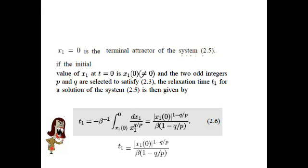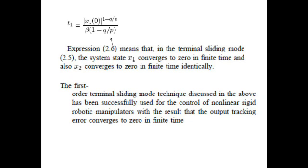X1 equals zero is called the terminal attractor of the system given in equation 2.5. If the initial value X1(0) is not equal to zero and P and Q are designed to satisfy condition 2.3, then the relaxation time t1 is given by integrating equation 2.5. This means that in the terminal sliding mode, state variable X1 converges to zero in finite time, and X2 also converges to zero identically.